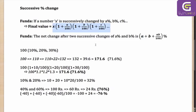This essentially means that if instead of A%, B%, C% in that order, it was C%, then A%, then B%, would your result change? No, it would still remain the same — because they are multiplicative.